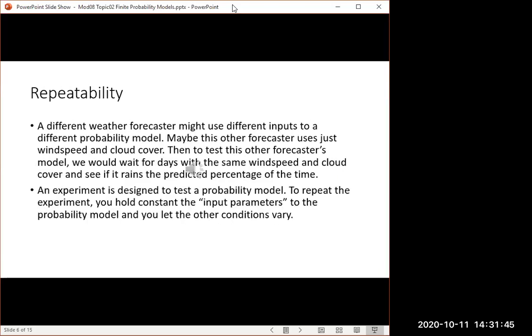Now a different forecaster might use different inputs. Maybe this other forecaster just uses wind speed and cloud cover. The first forecaster was using temperature and humidity. This one's using wind speed and cloud cover. They have different inputs that their model is based on.